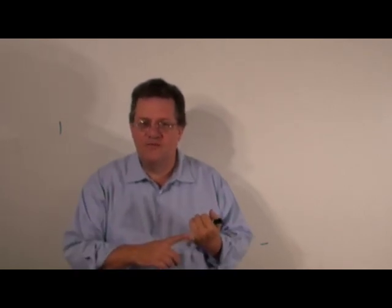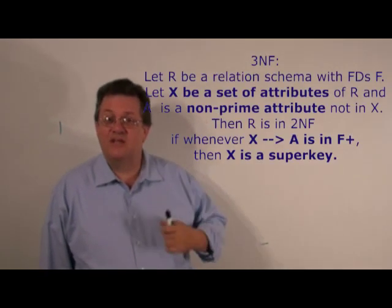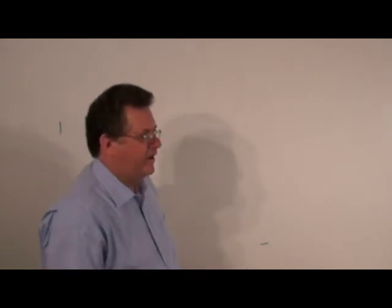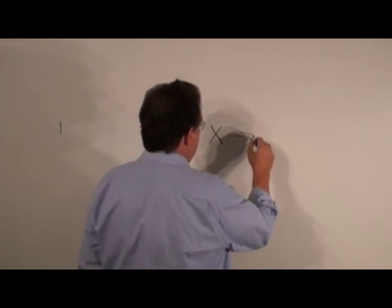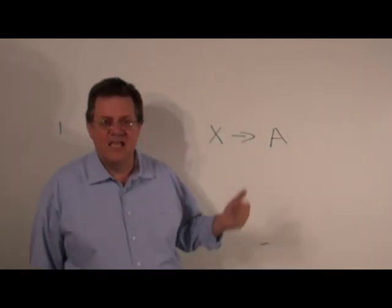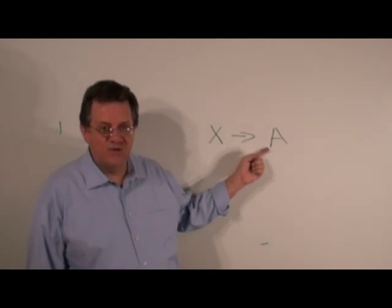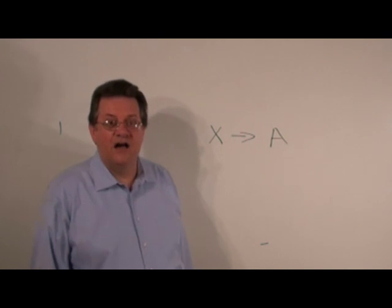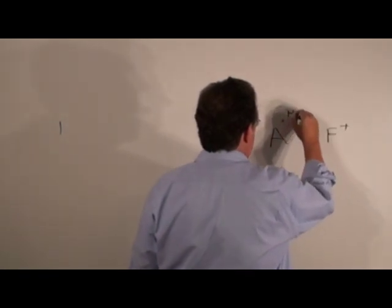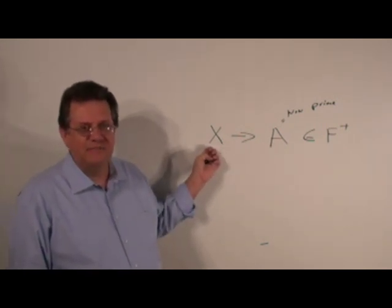We've done a definition for first normal form and second normal form. Let's take a look at third normal form. Now you have to read it carefully because it looks a lot like second normal form. In third normal form, R is a relational schema, F is a set of functional dependencies, X is a set of attributes in R, A is a non-prime attribute not in X, and this is an element of F-closure. So if A is non-prime, X has to be a super key.